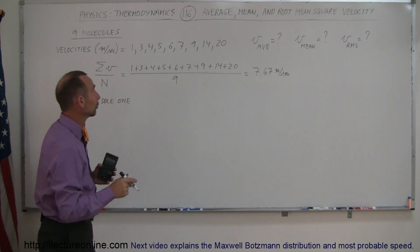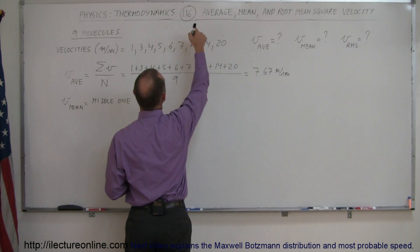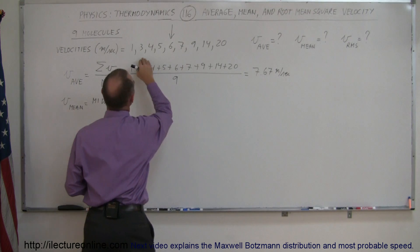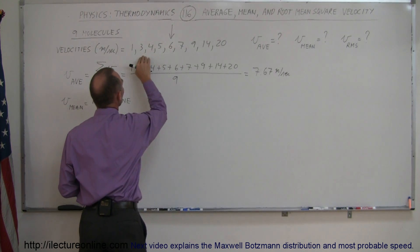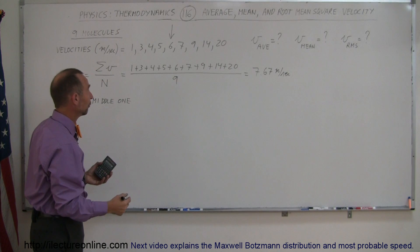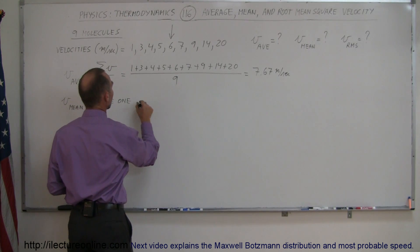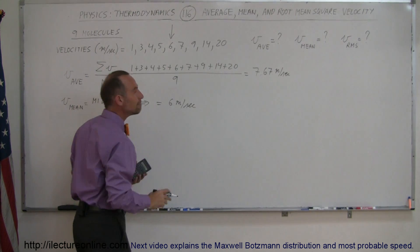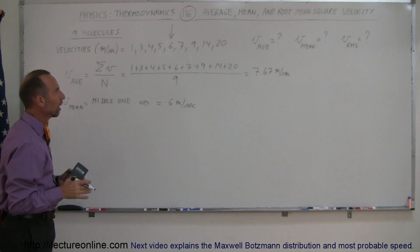Now, of course, I picked nine molecules because that means that the one in the middle, one, two, three, four, that would be this one right here. So that would be the middle one. That means there's four molecules with smaller velocities and four molecules with larger velocities. And so therefore, in this case, the middle one means that it's equal to 6 meters per second. That would be the mean velocity.